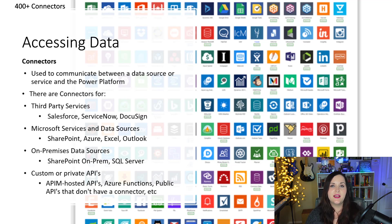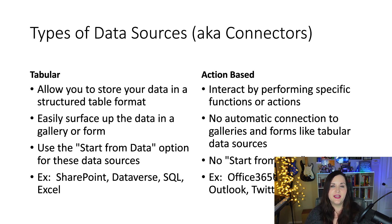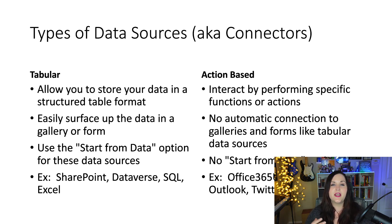Now that we understand how the Power Platform connects to data, let's break down the different types of data sources. The two main categories are tabular and action-based data sources. Tabular data sources allow you to store your data in a structured tabular format. Examples include SharePoint lists, SQL Server tables, and Excel — probably the easiest and most universal example — all of those are tabular data sources.